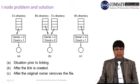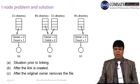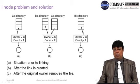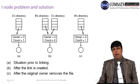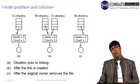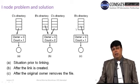Consider this scenario: C has created a file, C is the owner, so owner count equals one. After B links to the file, count becomes two. After the original owner C removes the file, B's directory still contains the pointer — owner was C but count is now one. B can decide that even though the owner deleted it, B can still use and maintain that file as long as the count is greater than zero.